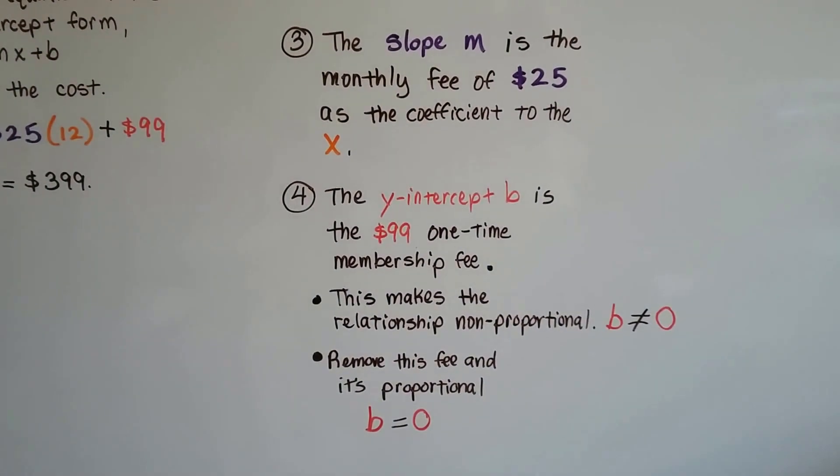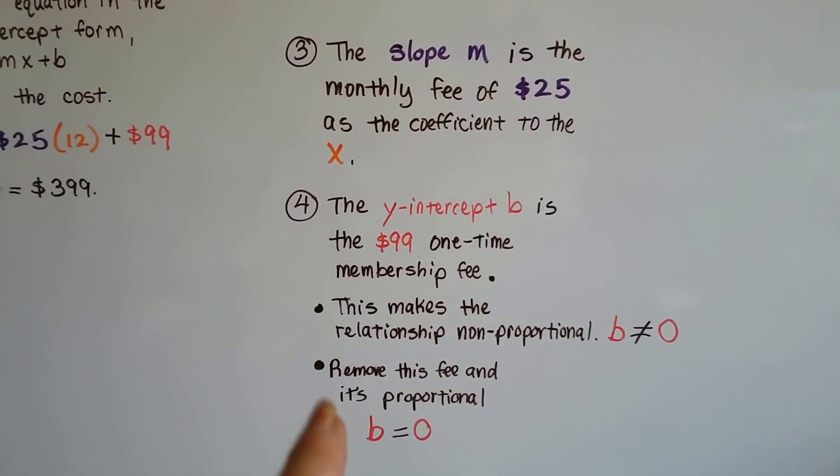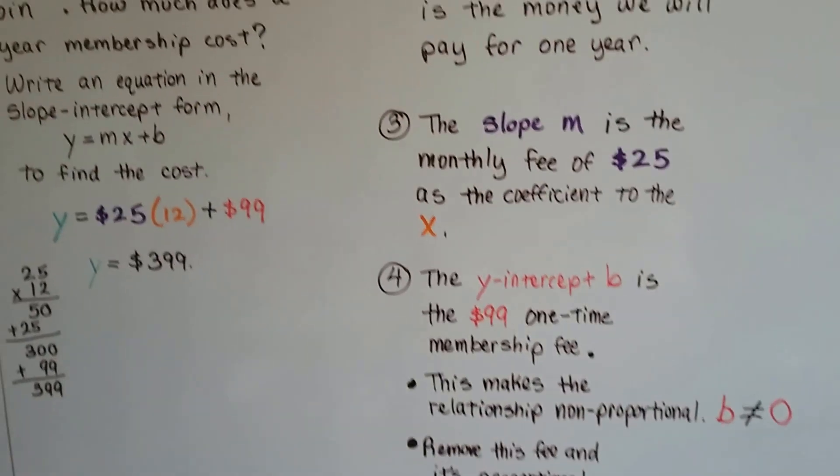This makes the relationship non-proportional because b is not equal to zero. If we remove this $99 fee, it'll be proportional because b will be zero.